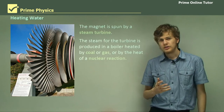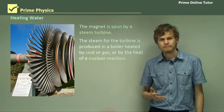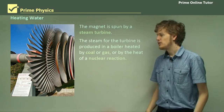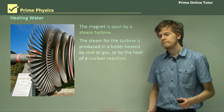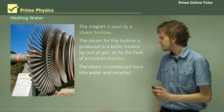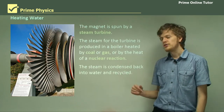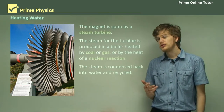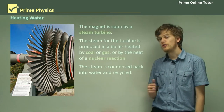The spinning is what turns the magnet, and the magnet produces electricity. The steam is then condensed back into water and recycled once it's been used to turn the turbine.